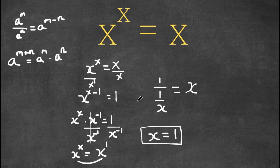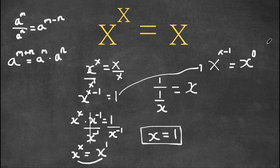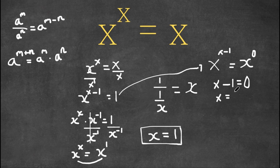However, going back to our equation x to the power of x minus 1 equals 1, I'm actually going to rewrite this as x to the power of x minus 1 equals x to the power of 0, because 1 is the same thing as x to the power of 0. Doing the same thing, we set exponents equal to each other: x minus 1 equals 0, and adding 1 on both sides gives x equals 1. So this is another way of arriving at the same answer.